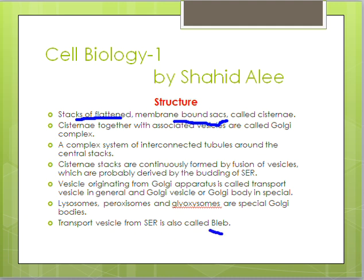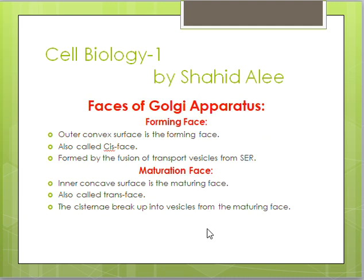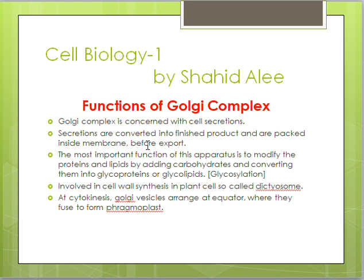The Golgi apparatus has two faces: the forming face (cis face), which is the outer face receiving material, and the maturing face (trans face), which is where processed material exits. The cisternae progress from the cis face to the trans face.